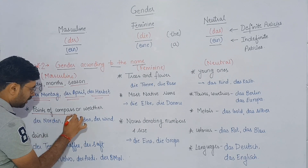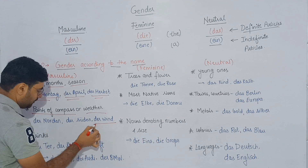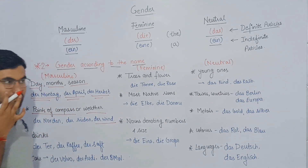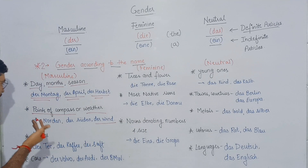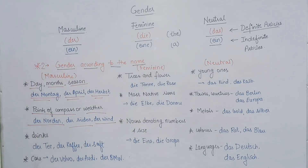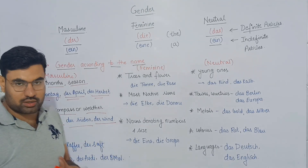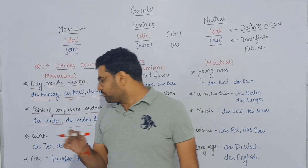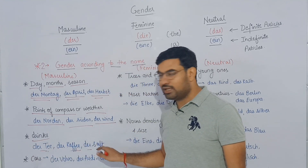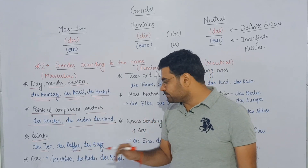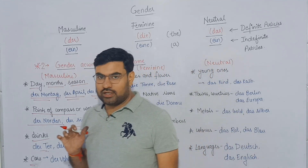Similarly, points of the compass and weather are masculine — for example 'der Regen' (the rain), and directions like north and south. Drinks such as tea, coffee, and juice — 'der Tee,' 'der Kaffee,' 'der Saft' — are all masculine in gender. Cars like Volvo, Audi, and BMW are also masculine in gender.